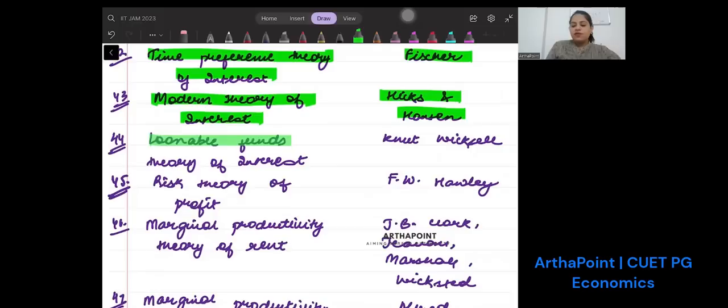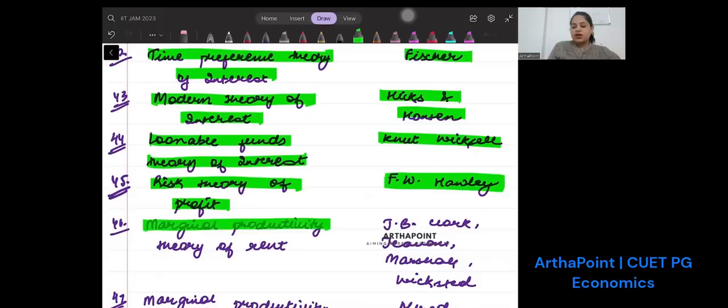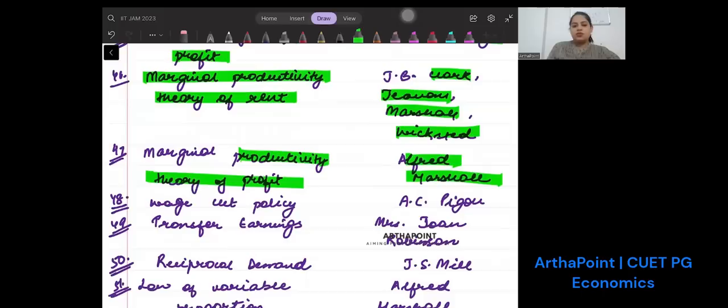I am scrolling slowly so that you can write it. Loanable fund theory of interest was given by Knut Wicksell. Risk theory of profit was given by F.H. Hawley. Marginal productivity theory of rent was given by Clark, Jevons, Marshall, and Wicksell.